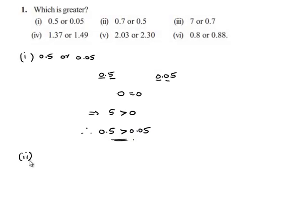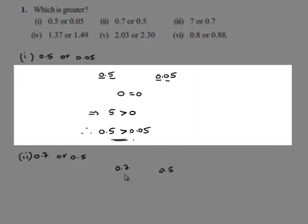Take down the second one, 0.7 or 0.5. Here we can observe that the digits on the left side of the decimal are the same. So we have to compare the digits on the right side of the decimal to find which is greater. Here we can observe that 7 is greater than 5. So we can say that 0.7 is greater than 0.5.